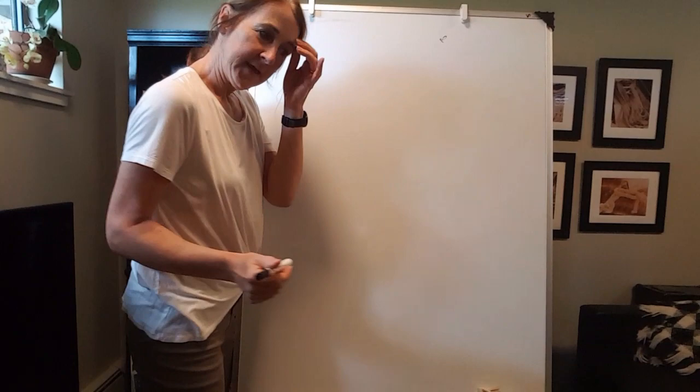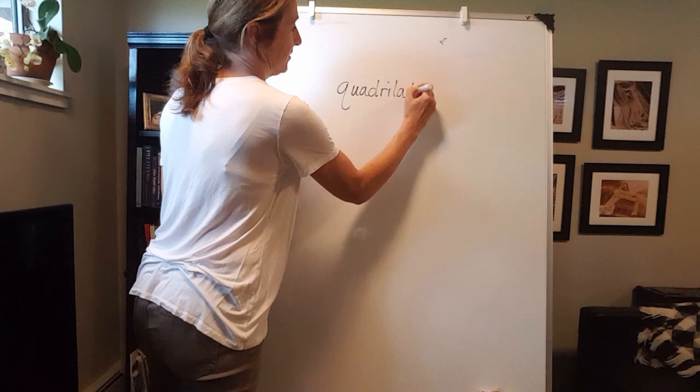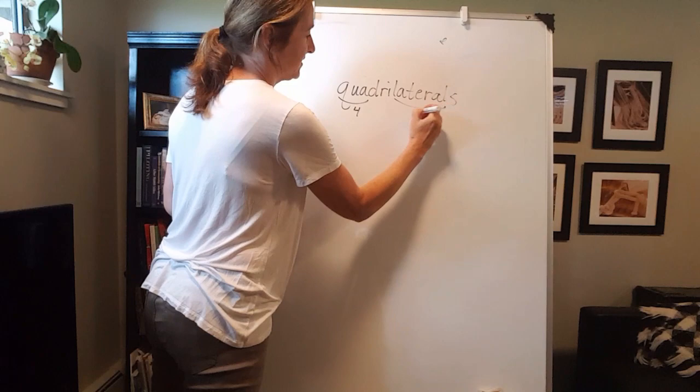Hi there, third graders! We're ready to move on with math and we're almost done with our whole book, which is pretty cool. Today we're going to talk about what are called quadrilaterals. Quadrilaterals — this means four, this means lines.